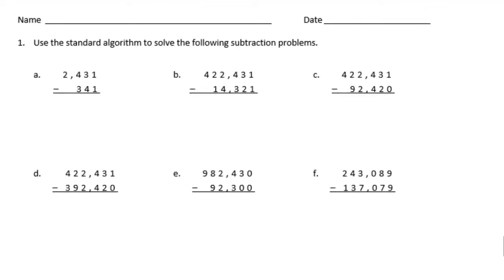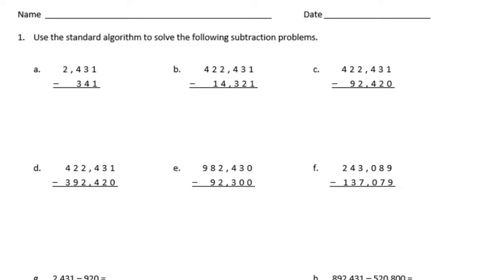A: 2,431 minus 341. We're going to start all the way on the right in the ones place. 1 minus 1 is 0. Then we have 3 minus 4 — we can't take 4 away because we'll end up with a negative number. So we need to borrow from the next place value, which is this 4. We make it a 3, and add a group of 10 to the 3, making it 13. So 13 minus 4 is 9, 3 minus 3 is 0, and 2 minus nothing is 2. We get 2,090.